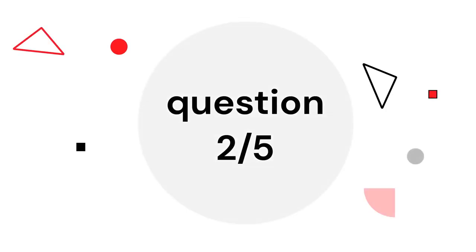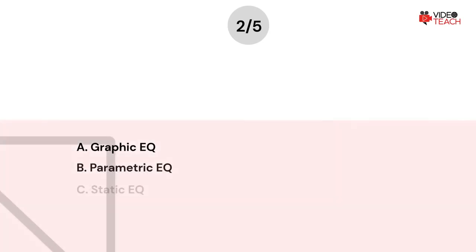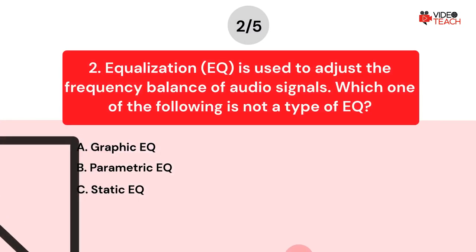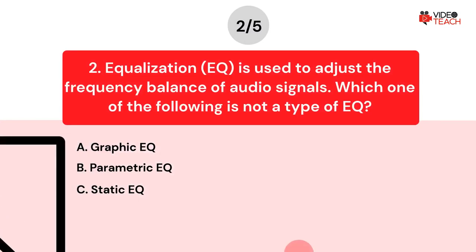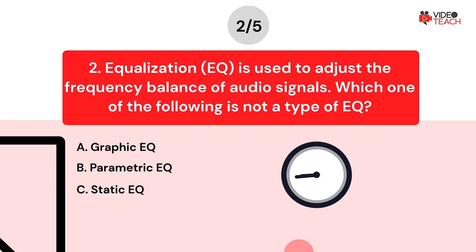Question number two. Equalization is used to adjust the frequency balance of audio signals. Which one of the following is not a type of EQ? Option A: Graphic equalization. Option B: Parametric equalization. Option C: Static equalization. Now you have about 15 seconds to think about your answer.